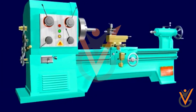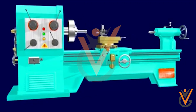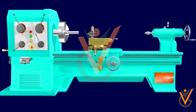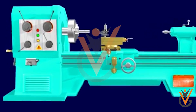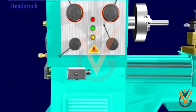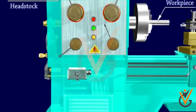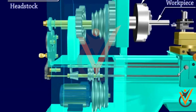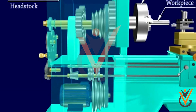The main function of the headstock is to transmit power to the different parts of the lathe. It supports the main spindle in the bearing and aligns it properly. It also houses the necessary transmission mechanism with speed-changing levers to obtain different speeds.